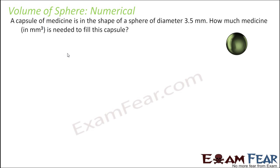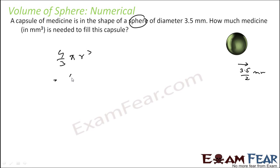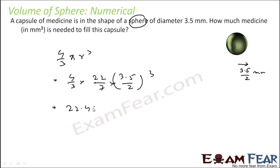Let's see the last question. A capsule of medicine is in the shape of a sphere with diameter 3.5 millimeters, meaning the radius is 3.5/2 mm. How much medicine is needed to fill this capsule? It's simply the volume of the sphere: 4/3 πr³ = 4/3 × 22/7 × (3.5/2)³, which gives 22.46 cubic millimeters. That is the volume of liquid required to fill the capsule.